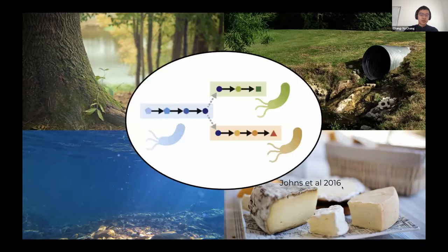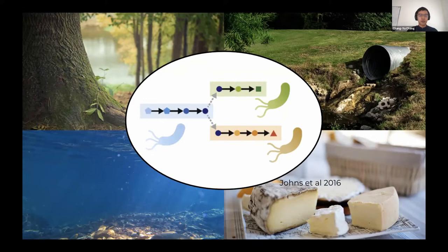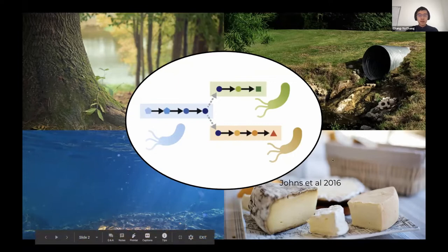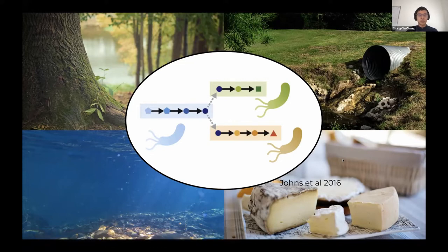There has been great interest in trying to assemble synthetic microbial communities which can perform functions that cannot be easily performed by a single strain. For instance, if there's a hard-to-degrade toxin like lignin, it's hard for one strain to fully degrade the complex — it needs a full community to do it. But before a community can perform a function, it has to coexist first.